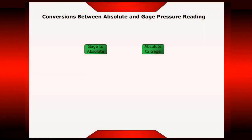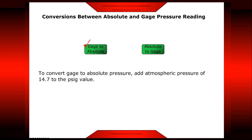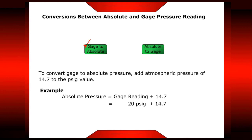Now let's talk about conversions between absolute and gauge pressure readings. To convert gauge to absolute pressure, add atmospheric pressure of 14.7 to the pounds per square inch gauge value. For example: absolute pressure equals the gauge reading plus 14.7, which equals 20 pounds per square inch gauge plus 14.7, which equals 34.7 pounds per square inch absolute.